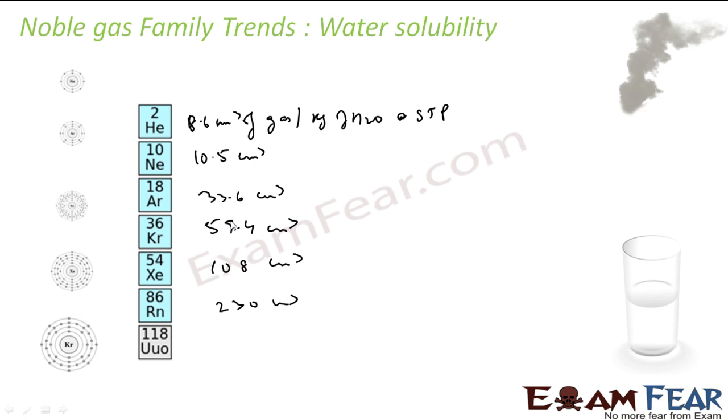Now the question is, why is solubility increasing going down the group? The increase in solubility is because of the ease of polarization, which increase down the group. Because of increasing in size, it can easily polarize.